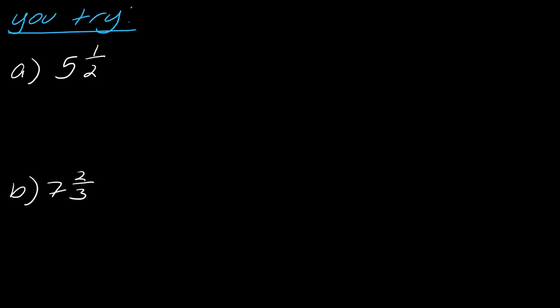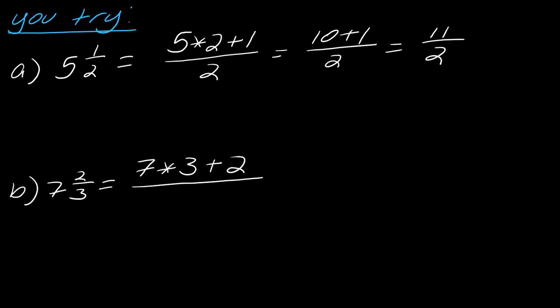Okay. So I have two of these for you to try on your own if you want to pause the video and then hit play when you're ready. So for A here, I'm going to take 5 times 2 plus 1 and then put all of that over the denominator of 2. So this will be 10 plus 1 over 2. So this comes out to 11 over 2. Okay. Now for B, this will be 7 times 3 plus 2, all of that over that denominator. So this becomes 21 plus 2. So this ultimately equals 23 over 3.